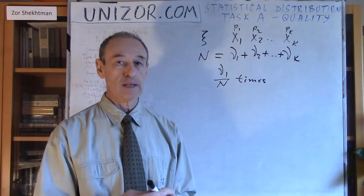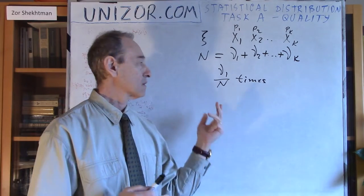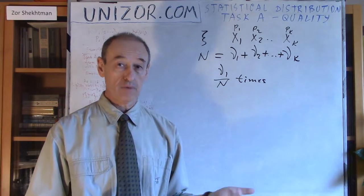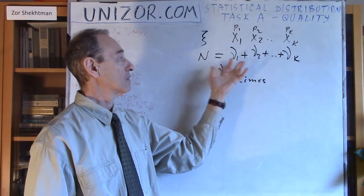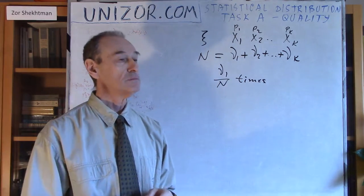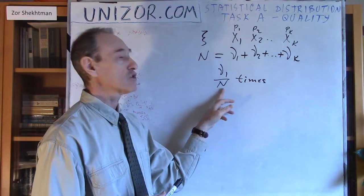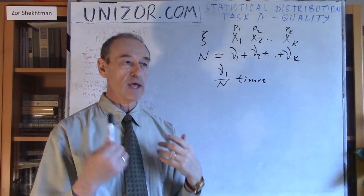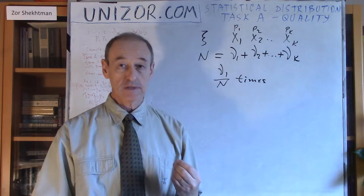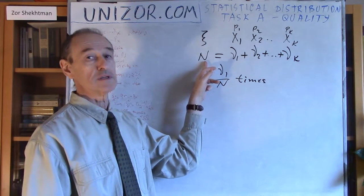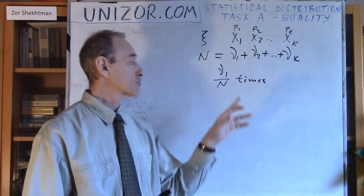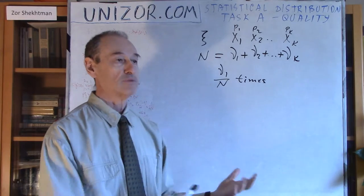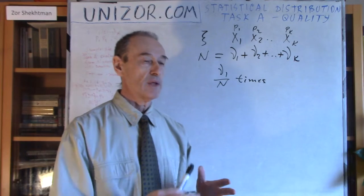Our task right now is: number one, to evaluate whether this is an unbiased evaluation — meaning that since ν₁ is actually a random variable, ν₁, ν₂, etc. are all random, the question is whether the expectation of ν₁/n equals p1. It will be equal, so that's fine. The much more difficult problem is to evaluate the margin of error. It's intuitively understandable that as n increases, the precision of this evaluation should also increase, meaning it gets closer and closer to p1. How close — that's what margin of error is about. So we will have to evaluate the margin of error, and we can mathematize our problem.